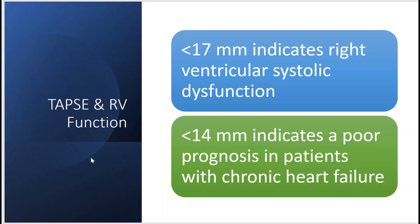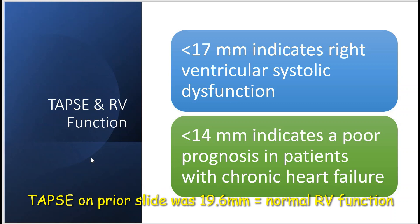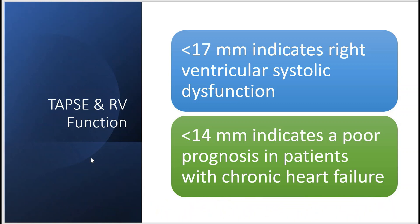We'll talk about TAPSE and RV function. If the measurement is less than 17 millimeters, that indicates right ventricular systolic dysfunction. And if it's less than 14 millimeters, it indicates a poor prognosis in patients with chronic heart failure.